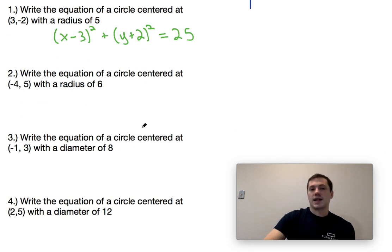Going on to the next one, an equation of a circle centered at negative four comma five, we would have x plus four squared plus y minus five squared equals 36.